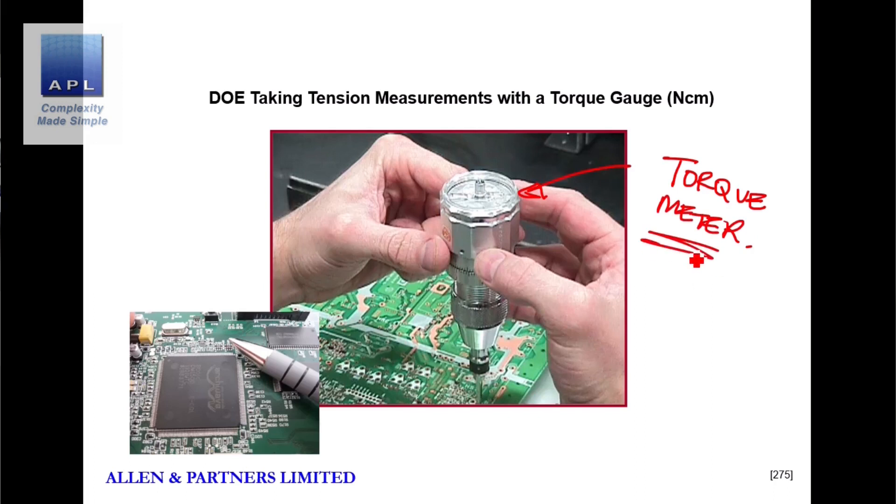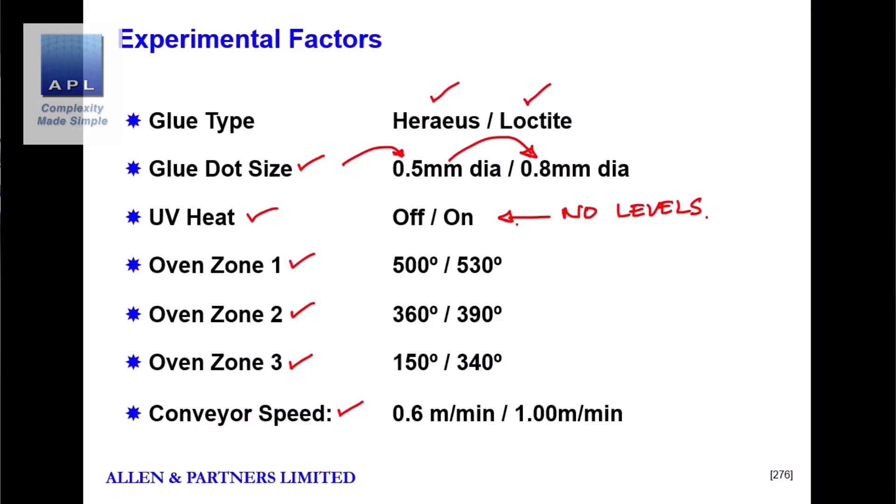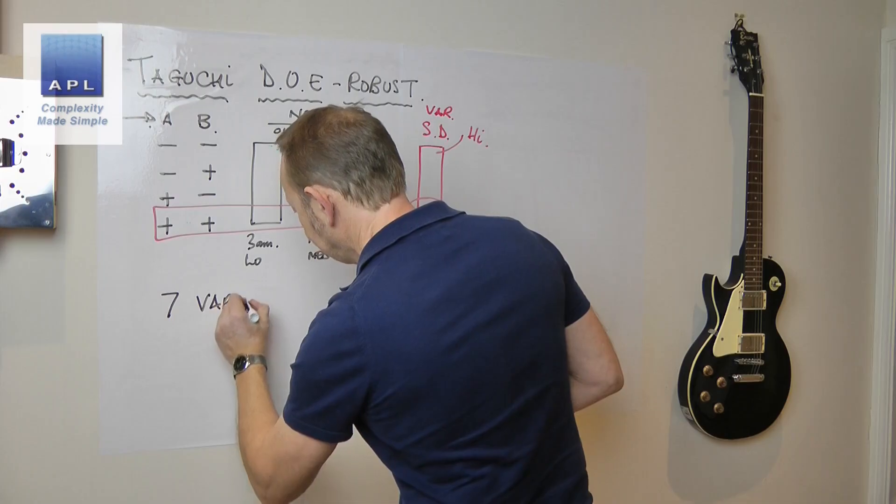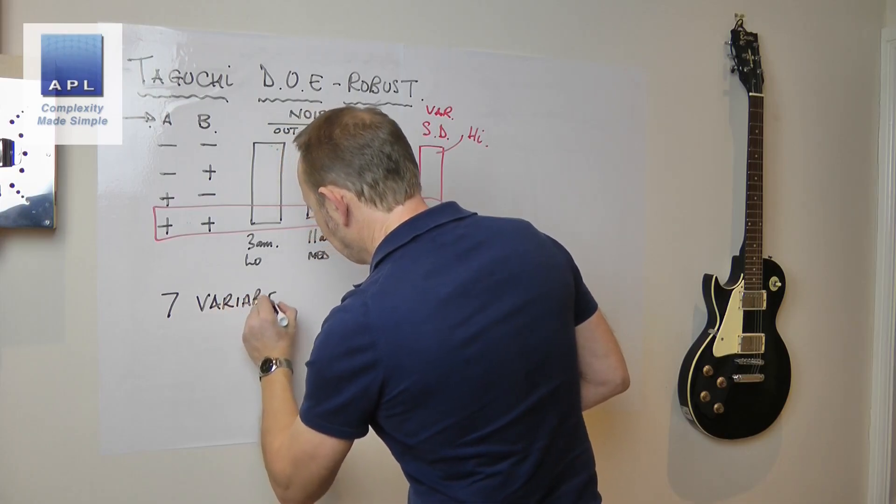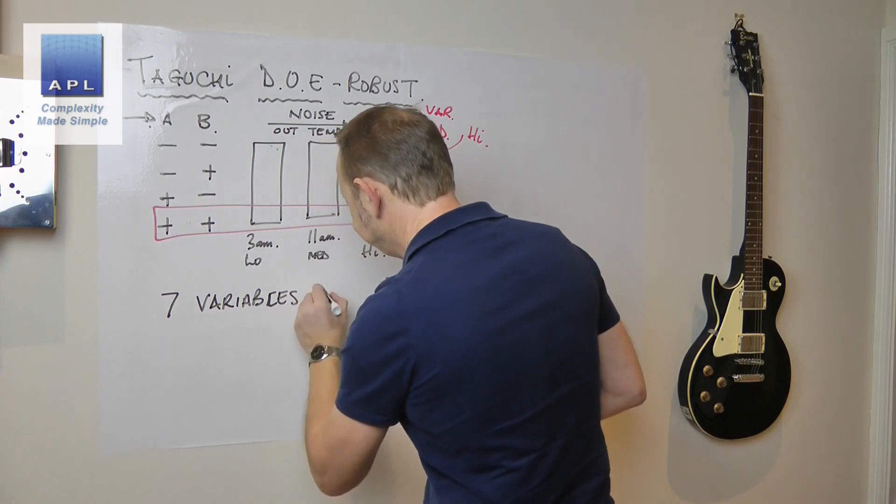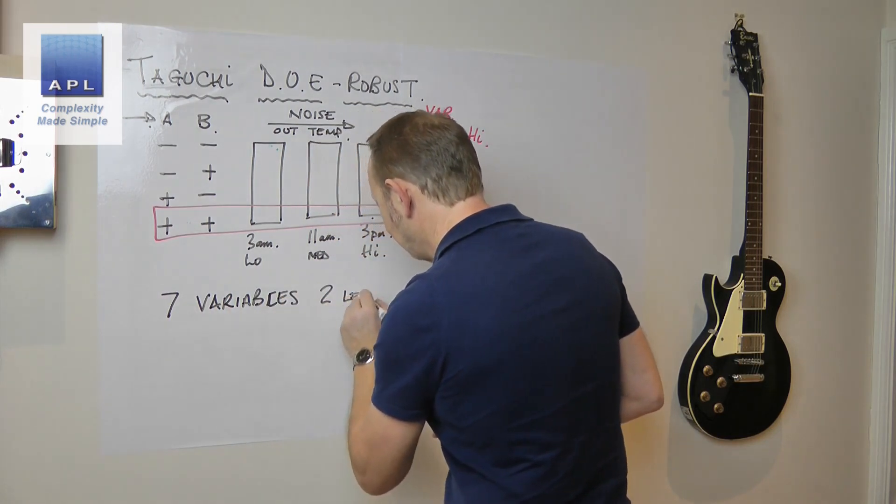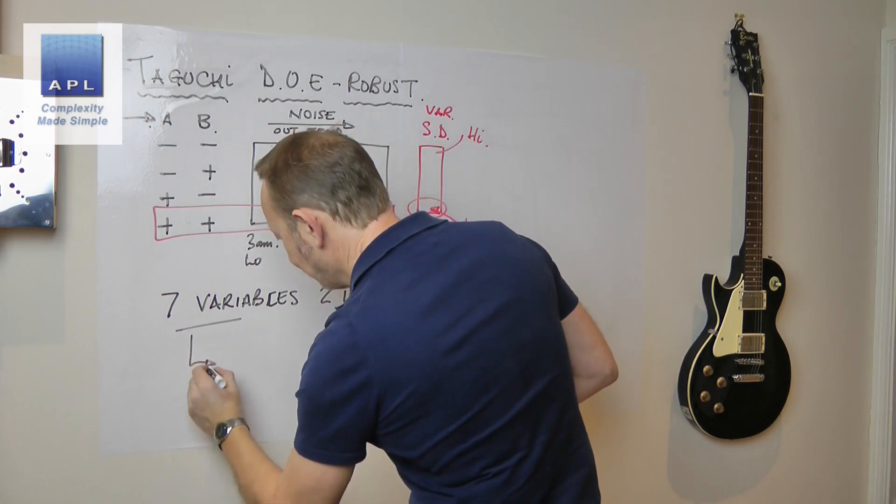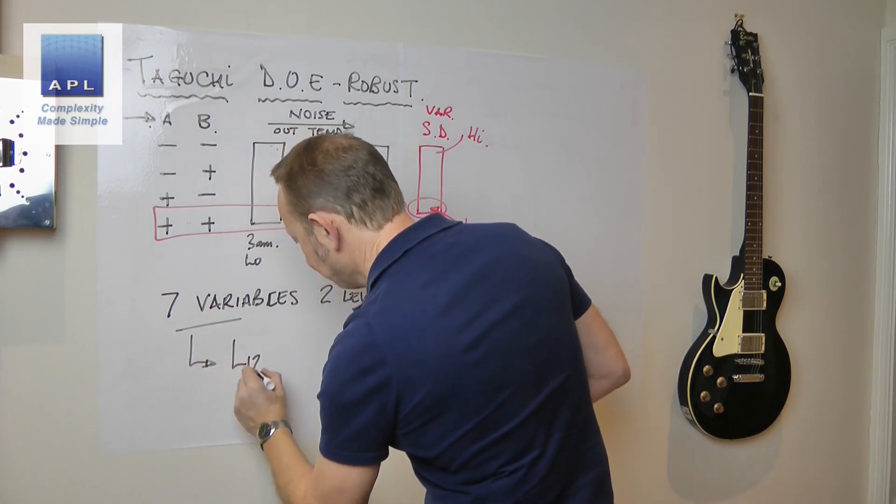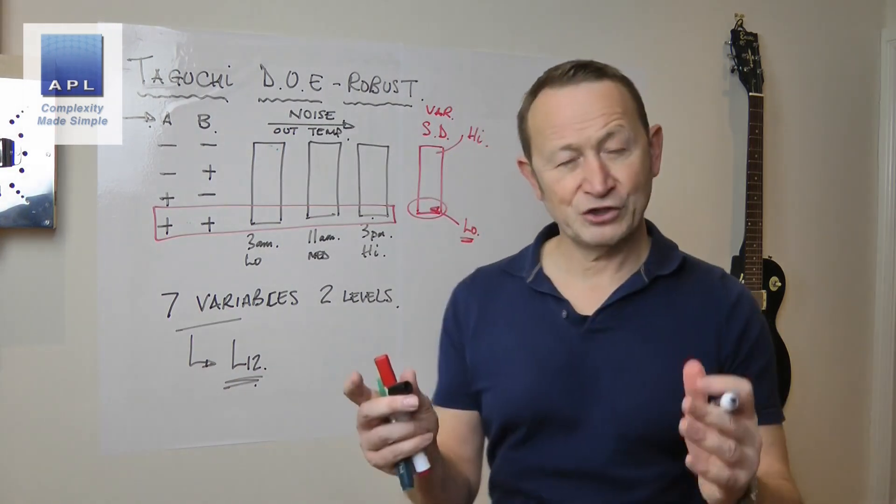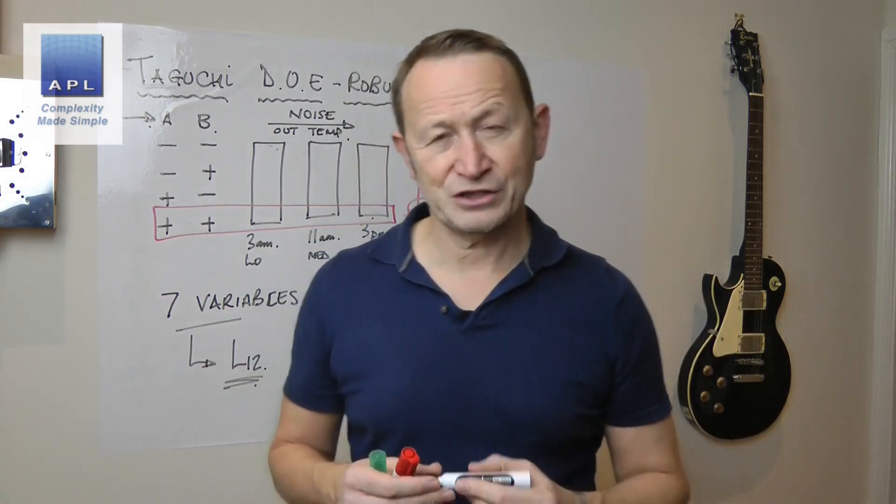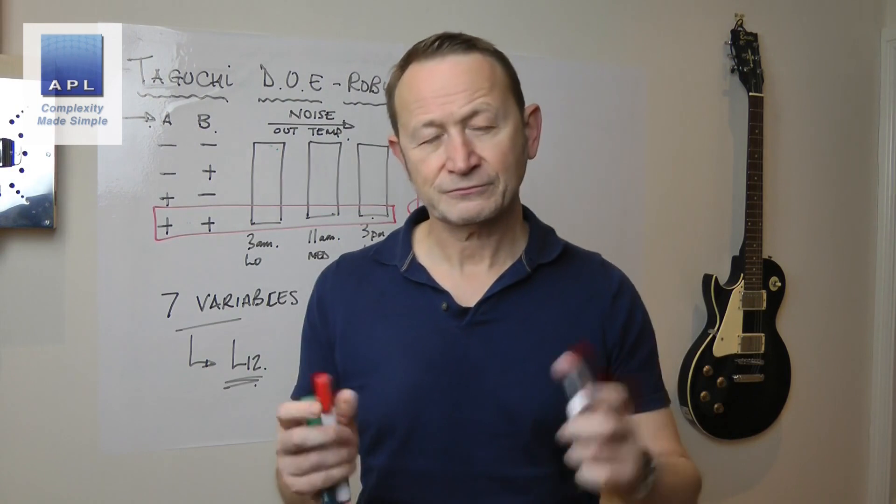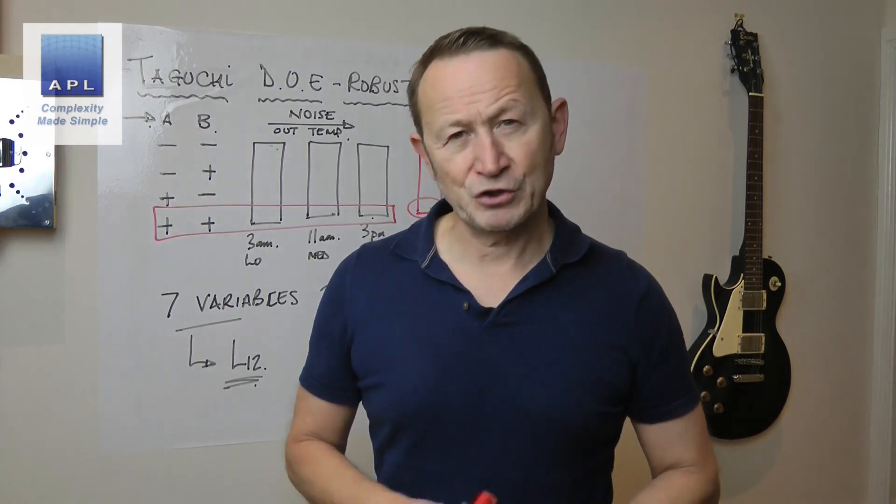So there's our seven variables at two levels. So because we've got seven variables, seven variables, two levels, my personal DOE of choice there is the Taguchi L12. Because in 12 runs, I can test what these seven variables do. Now let's talk about the noise.